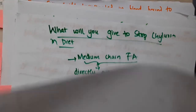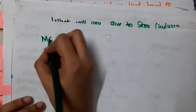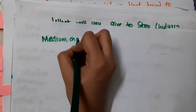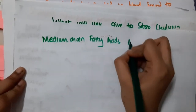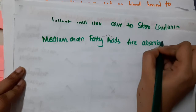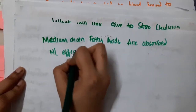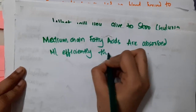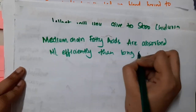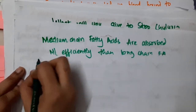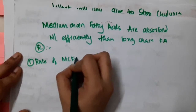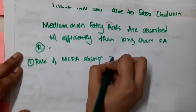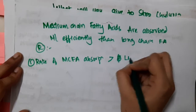Among all these, which is best absorbed? Medium chain fatty acids are absorbed more efficiently than long chain fatty acids. The first reason is that the rate of medium chain fatty acid absorption is more than that of long chain fatty acid absorption.